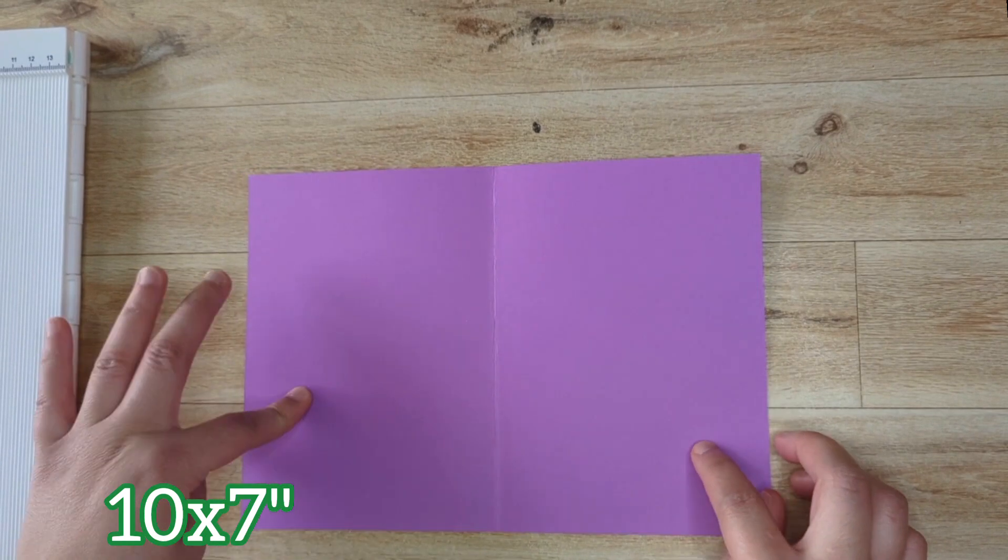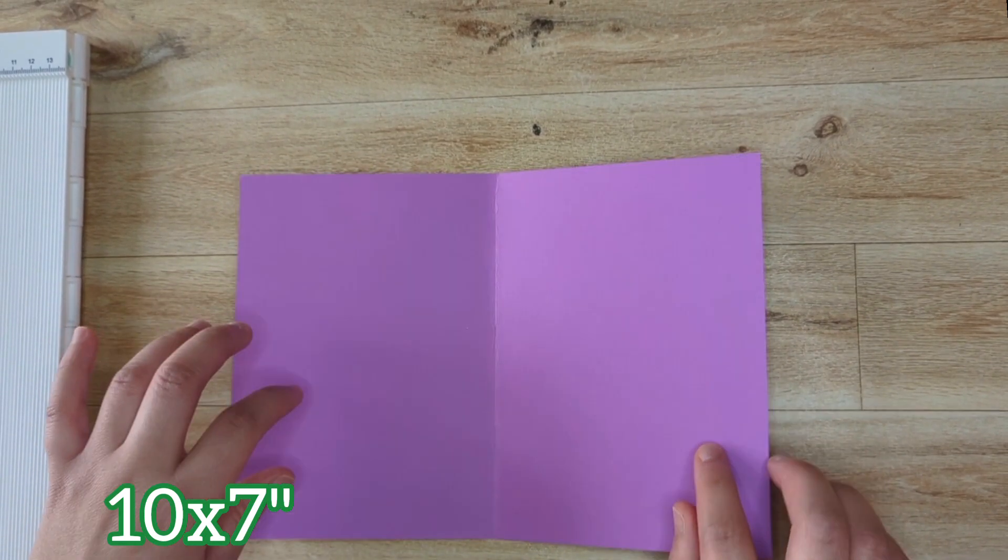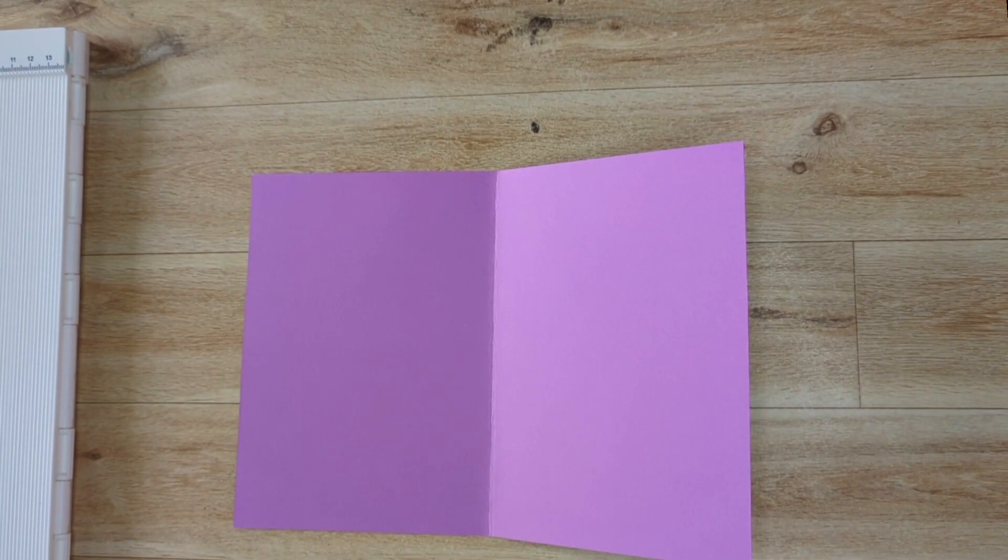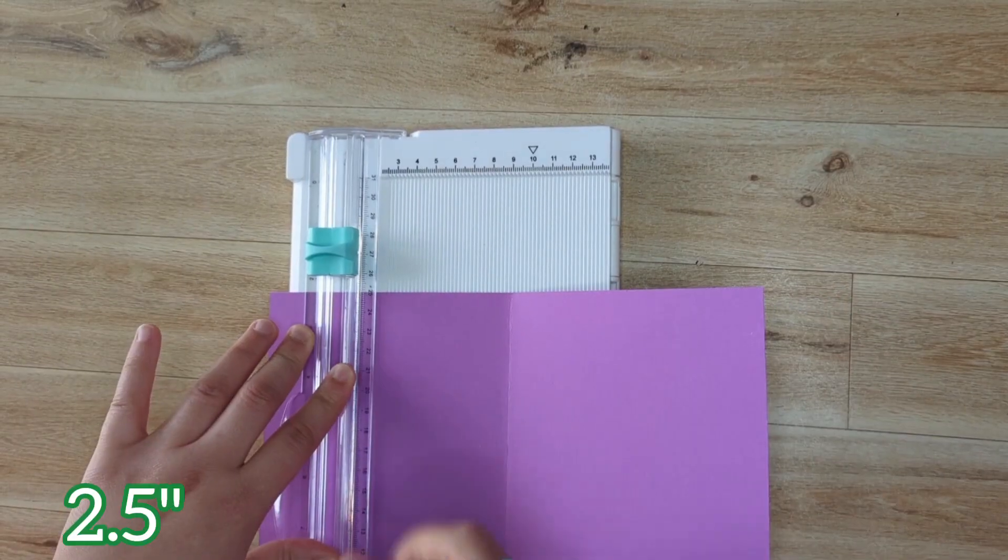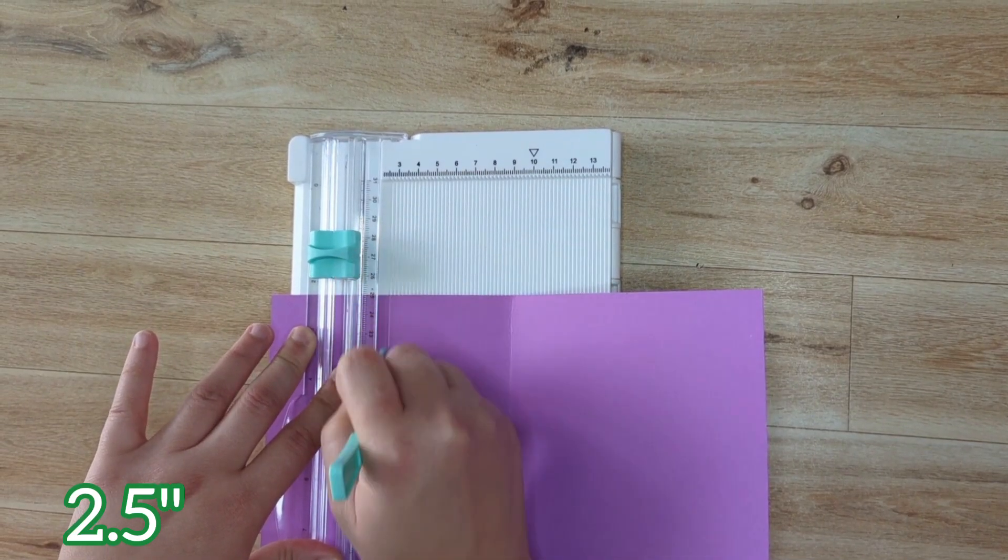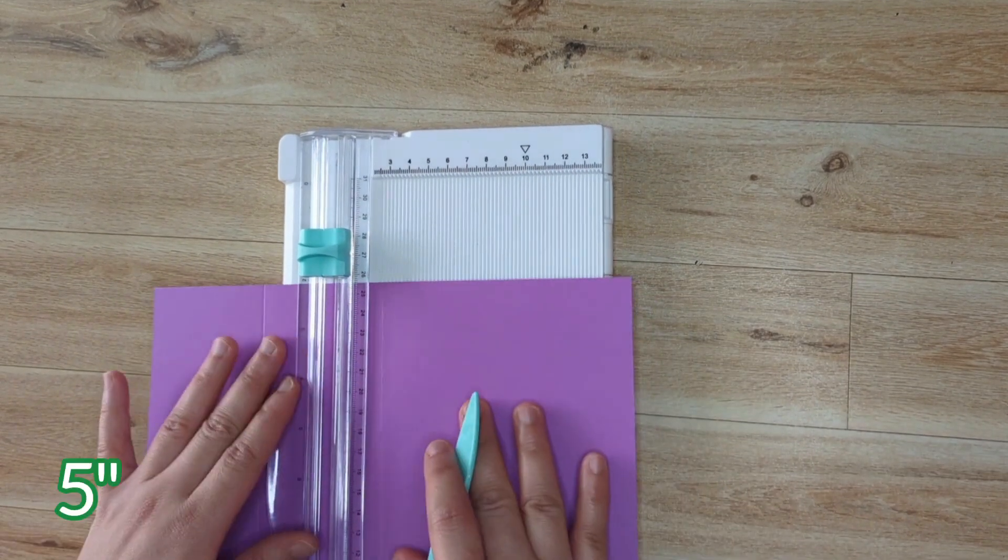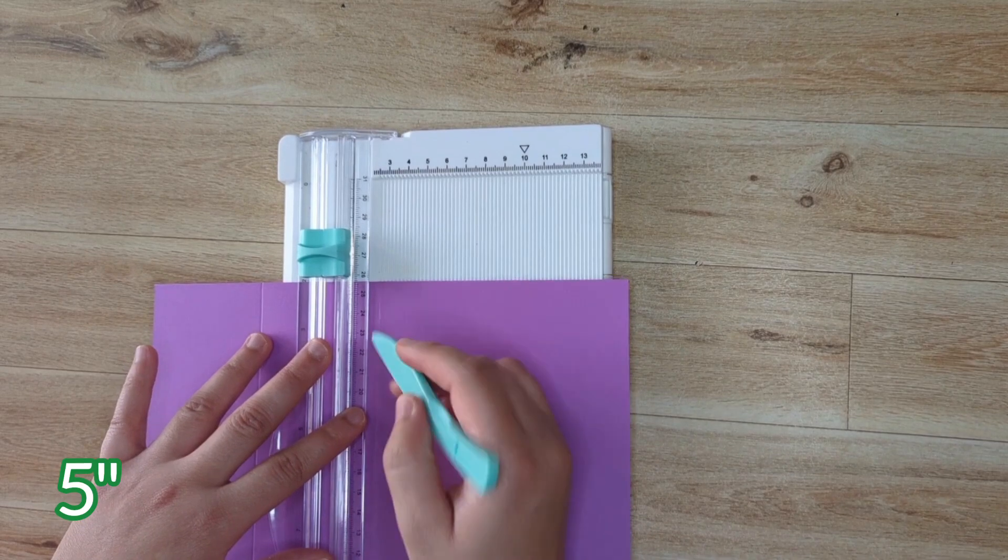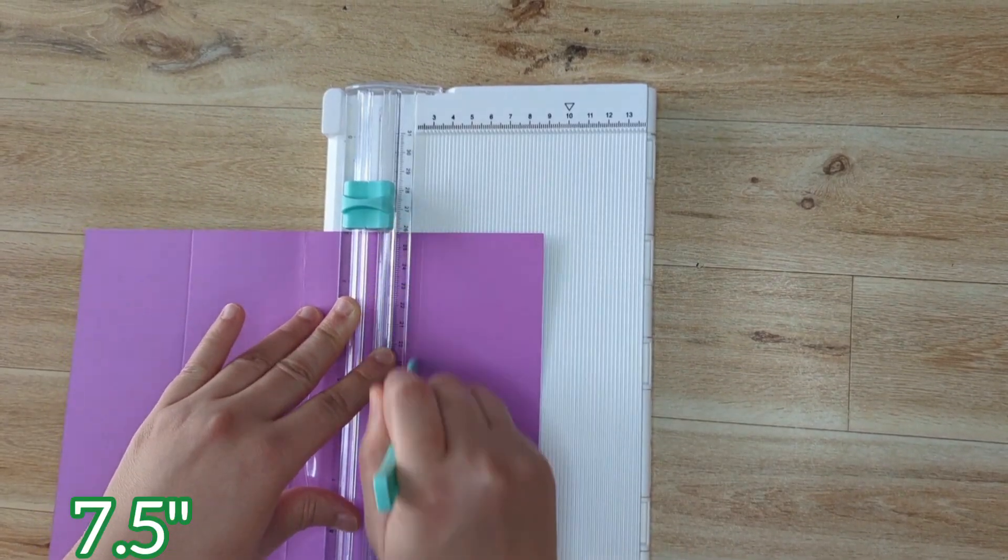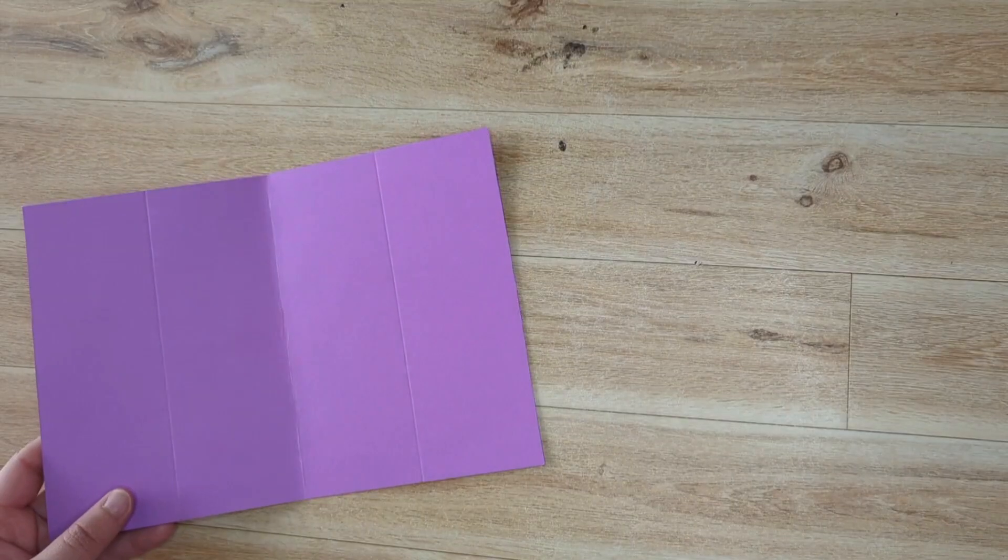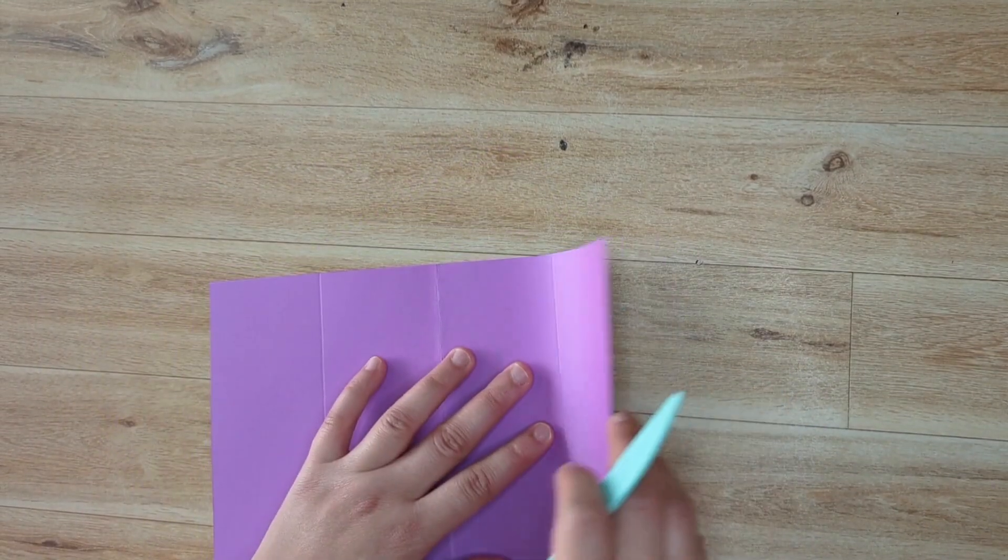This is my purple card base which is 10 by 7 inches, and what I'm going to do is score along the lines at 2.5, 5, and 7.5 inches. Something to finish these.